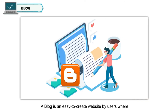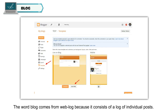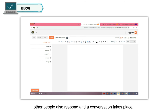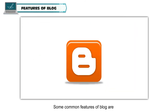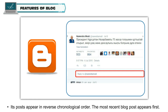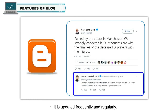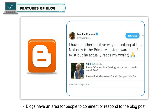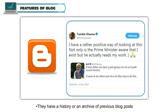Blog. A blog is an easy to create website by users where they share thoughts and information with the world. The word blog comes from weblog because it consists of a log of individual posts. It is like an online journal or diary on any topic from a person. Readers add comments to a blogger's post, other people also respond and a conversation takes place. Some common features of a blog are: its posts appear in reverse chronological order, the most recent blog post appears first, it is updated frequently and regularly, blogs can have an individual author or a collection of authors, and blogs have an area for people to comment or respond to the blog post. They also have a history or an archive of previous blog posts.